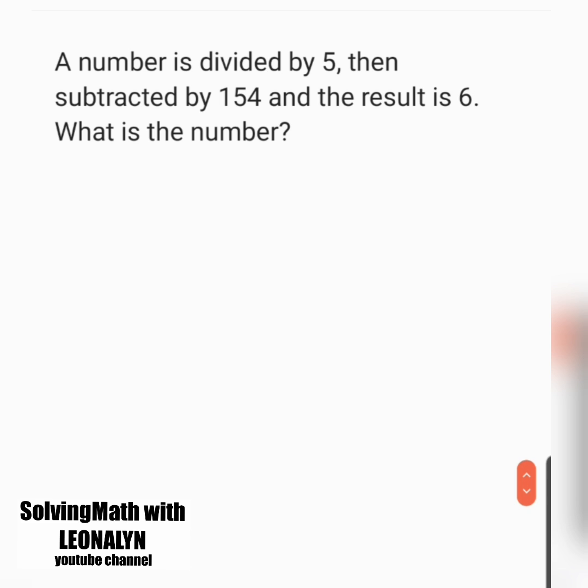Let's read the problem. A number is divided by 5, then subtracted by 154 and the result is 6. We can solve this in two ways.